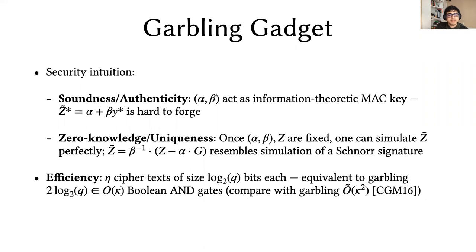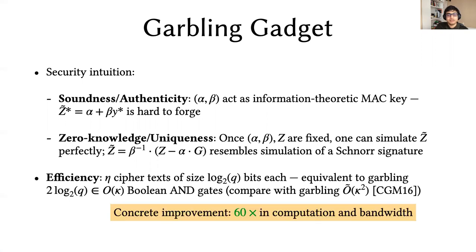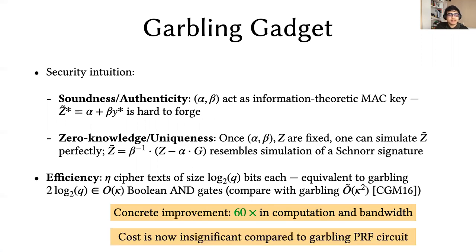As for efficiency, this gadget is equivalent to garbling two log q AND gates, which is a substantial improvement over a similar gadget from prior work. The result of this is that the cost of this particular operation is now insignificant compared to the cost of garbling the PRF circuit itself. We've eliminated one of the logistical costs.